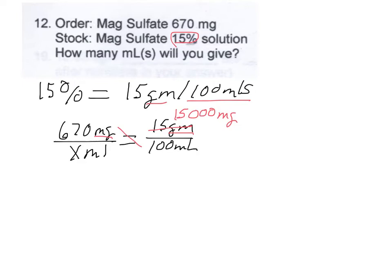So we're going to do 670 times 100 divided by the 15,000 and that gives us the answer of 4.46, and the six carries out indefinitely. So your answer would be in order to deliver 670 milligrams to the patient, you would have to give 4.46 mLs. So there's your answer.